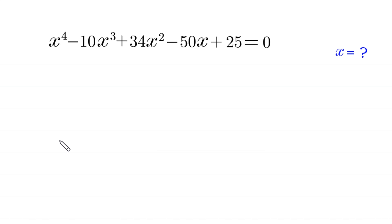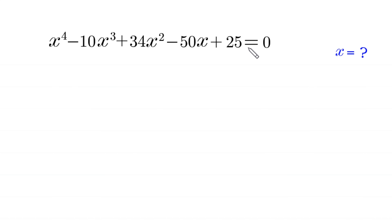Hello everyone, you are welcome. We need to solve this very nice algebra equation: x to the power 4 minus 10x cubed plus 34x squared minus 50x plus 25 is equal to 0. We need to find all possible values of x.